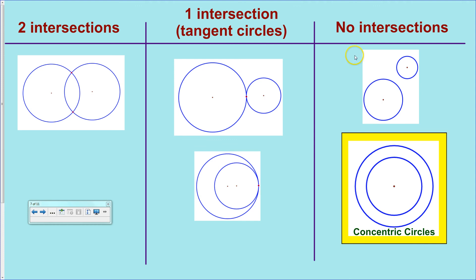Then you can have a situation where there are no intersections. This situation right here has no special name, but this one does. When they share the same center and they have no intersection, these are called concentric circles. So concentric circles is where they share the same center. Tangent circles are where they intersect at exactly one point.